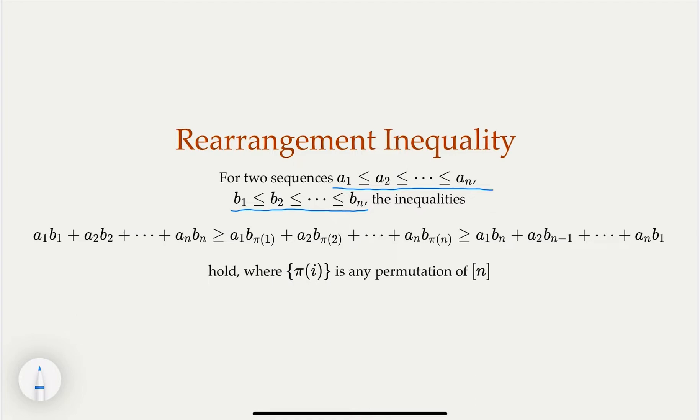Then we claim that this inequality holds. So here the pi, this is like the index. It's just a permutation of the index, original index. This symbol means from 1 to n. Pi usually means permutation.